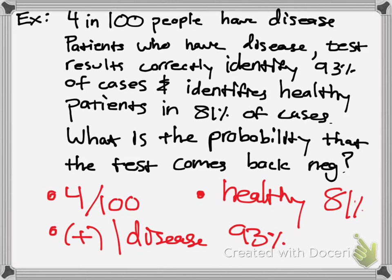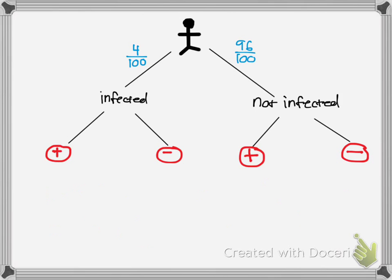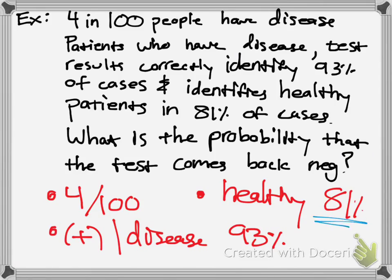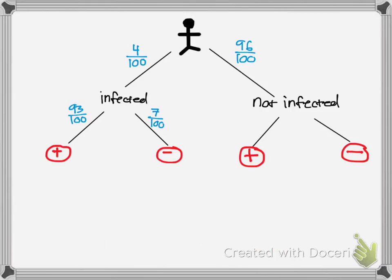If you have the disease, the test comes back 93% positive, which means 7% of the time it'll come back negative even if you are infected. Going back, if you're healthy, it correctly identifies 81% of patients — so testing negative means you're safe 81% of the time. That means 19% of the time it's incorrect, and you get a false positive. This is called a false positive.